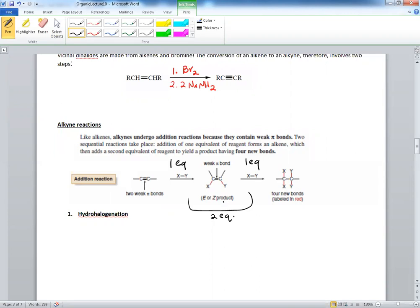This should make sense to you - you break only one pi bond, and then when you have another equivalence, you break the last pi bond in the alkene. Think of it as this is going from alkyne to alkene, and then alkene going to the alkane, just like we saw in the last chapter.